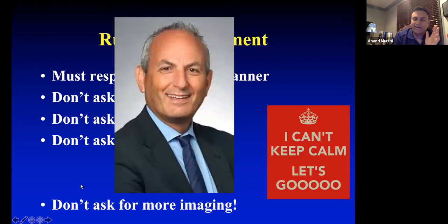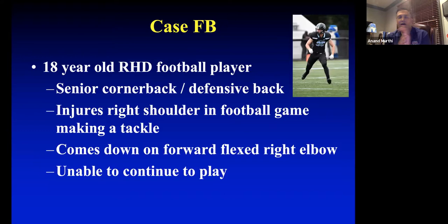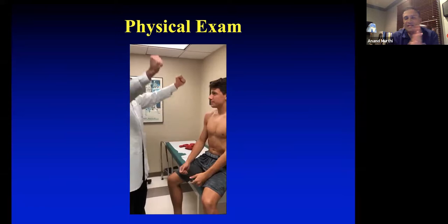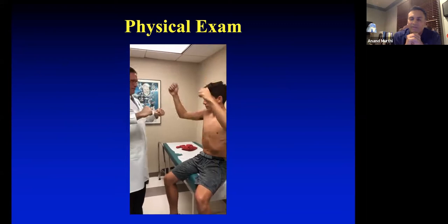Our first great case: an 18-year-old football player — actually a young Larry Gulotta, Hopkins football. He was a defensive back cornerback who injured his right shoulder. He tripped over the bench and came down on his forward-flexed arm. He whined to the coach that he couldn't play anymore. This is actually Michael Bryan's case. What do you guys look for on exam in the acute setting?